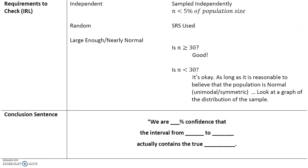Here are some requirements. There's an independence requirement: the sample size must be less than 5% of the population size, and simple random selection must be used. The sample size must also be large enough, or the data must be nearly normal — either n greater than 30, or n less than 30 as long as it's reasonable to believe the population is normal and unimodal symmetric. Then we write a conclusion sentence: we are blank percent confident that the interval from blank to blank contains the true parameter.